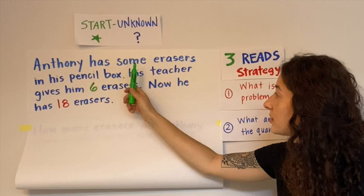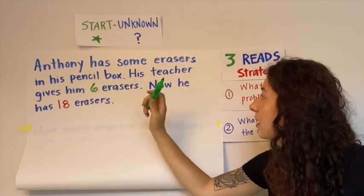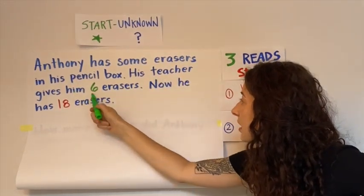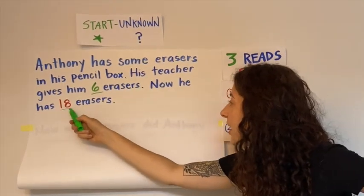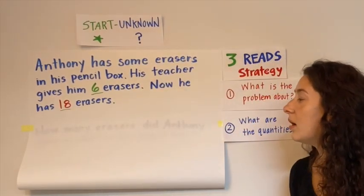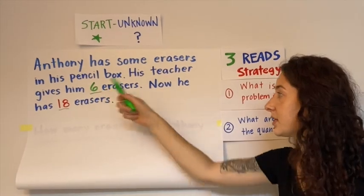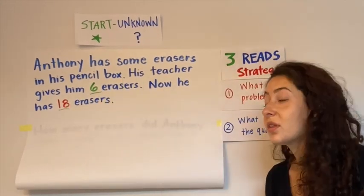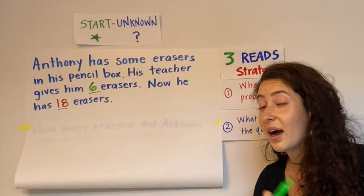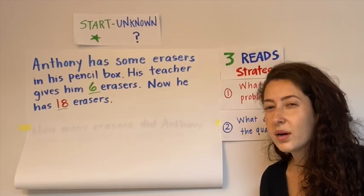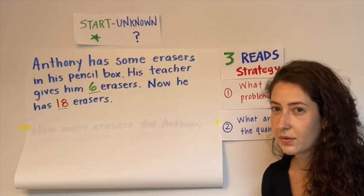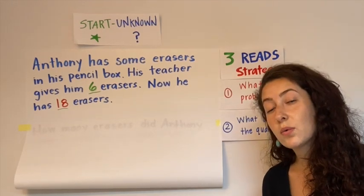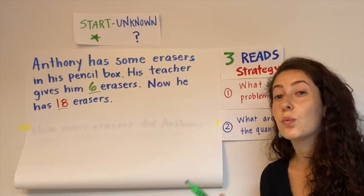Anthony has some erasers in his pencil box. His teacher gives him six erasers. Now he has 18 erasers. So I see that my quantities are 6 and 18, but there's one more quantity that I have not underlined. What is that quantity? And if you saw Ms. Taeyabas Kim's video, it is tricky because this quantity is expressed as a word.